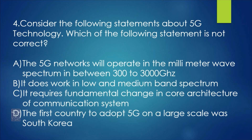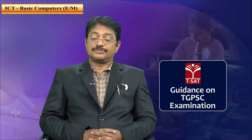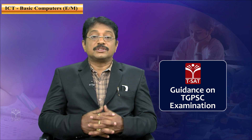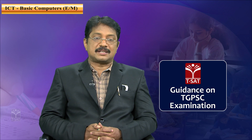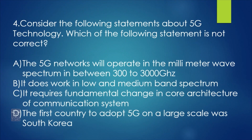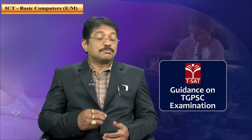Those were three questions based on nanotechnology — specifically nano urea liquid. Now the fourth question considers statements about 5G technology: 'Which of the following statements is not correct?' The options are: the 5G network will operate in millimeter wave spectrum between 300 to 3000 gigahertz; it does work in low and medium band spectrum; it requires fundamental change in core architecture of communication system; and the first country to adopt 5G on a large scale was South Korea. Without information on 5G technology, choosing the correct option is difficult.